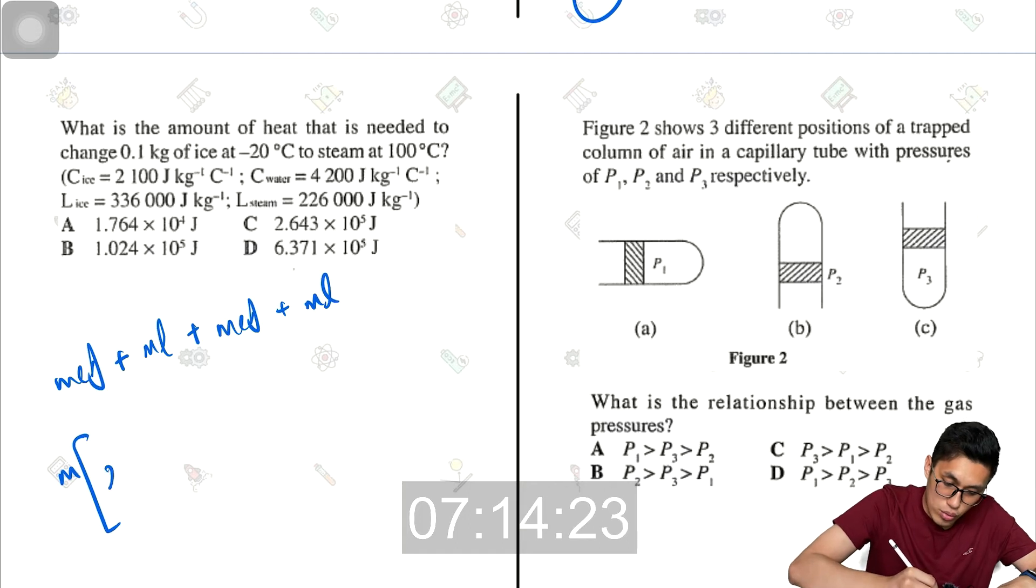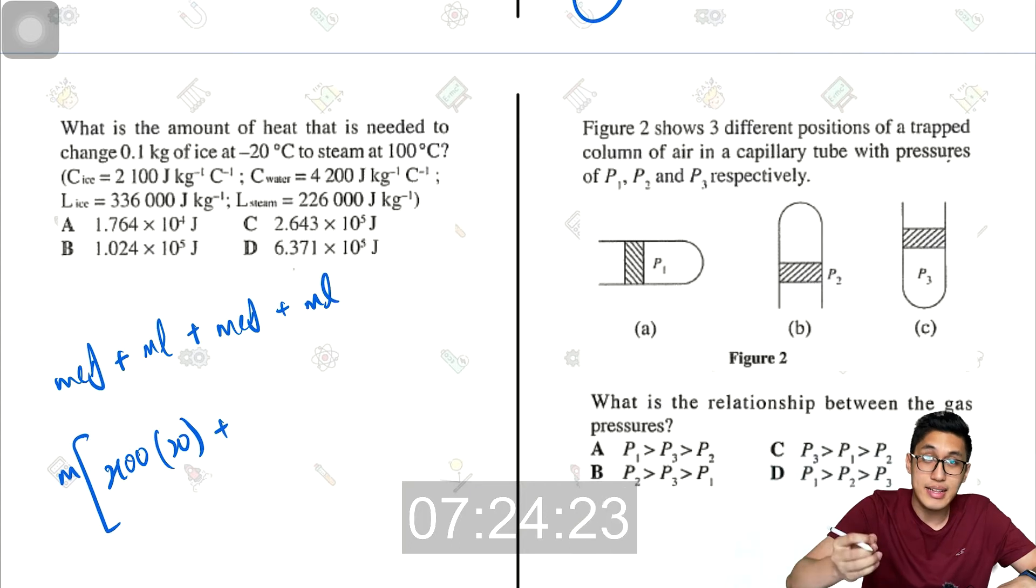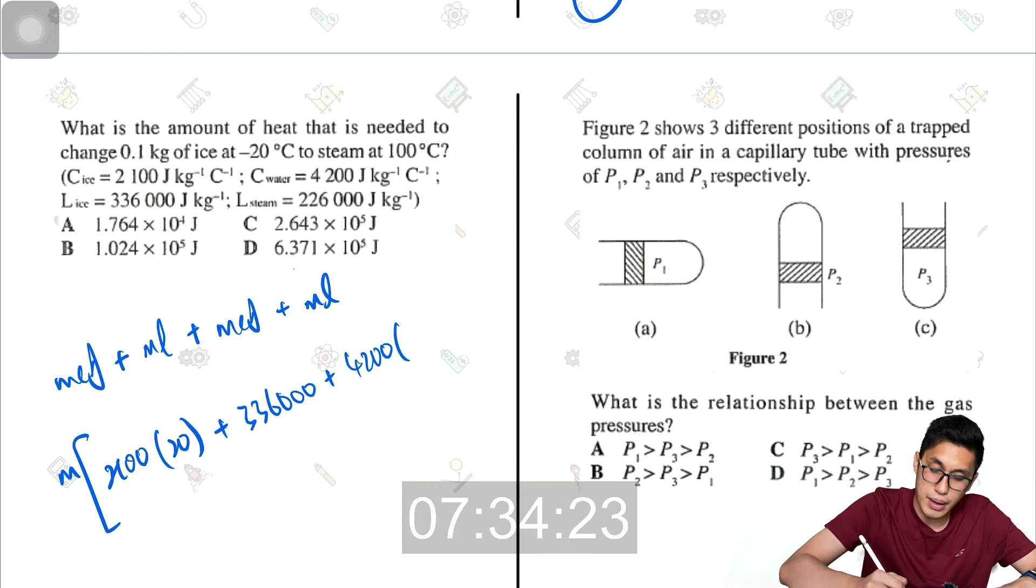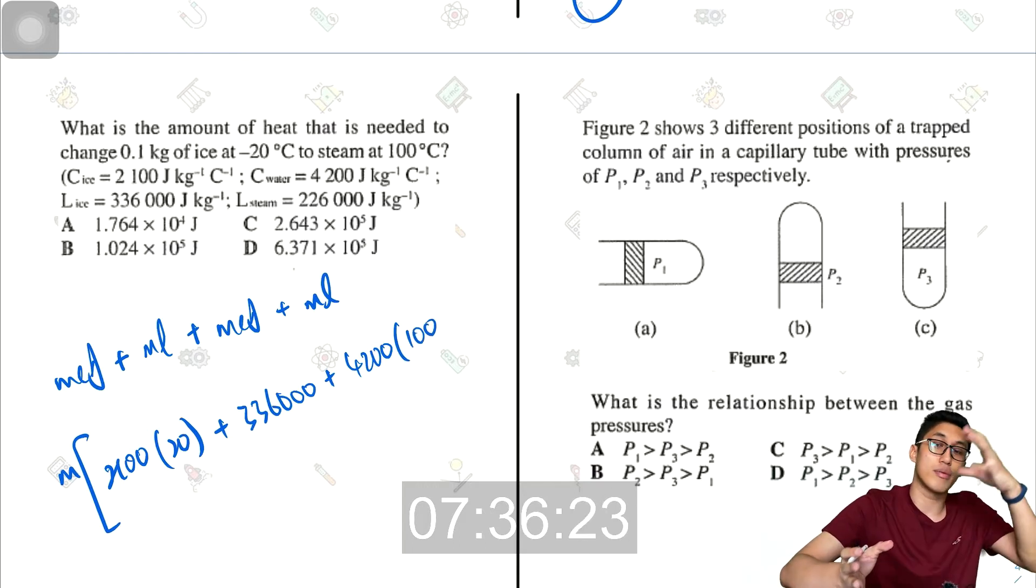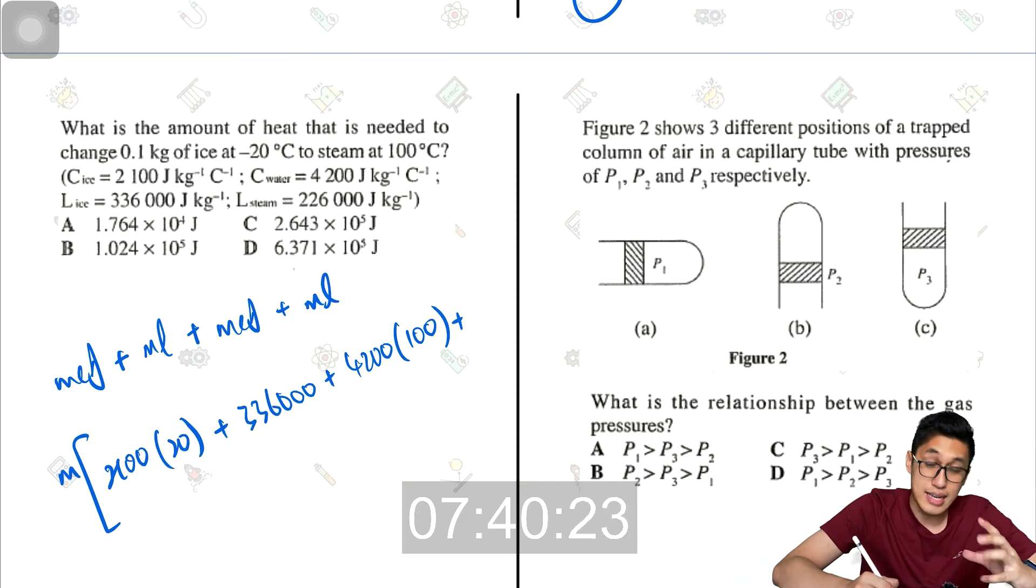The M, they are all the same, so I'm just going to extract the mass out. So the first one, C theta, that will be 2100 because that is ice. The change in temperature, that's 20 degrees from negative 20 to zero, plus the specific latent heat of fusion, which is L ice, 336,000, plus C theta, this is for water, so 4200 multiplied by 100 degrees because you go from 0 to 100, and then plus latent heat of vaporization, 2,260,000.